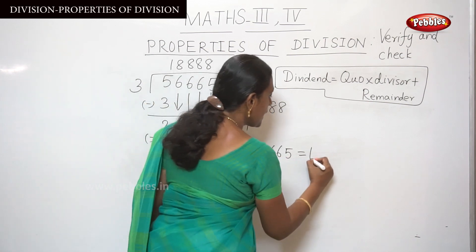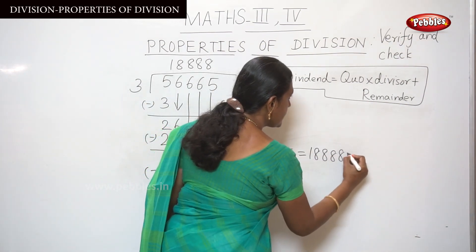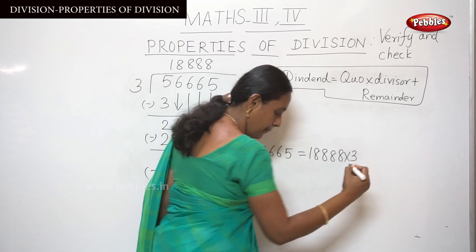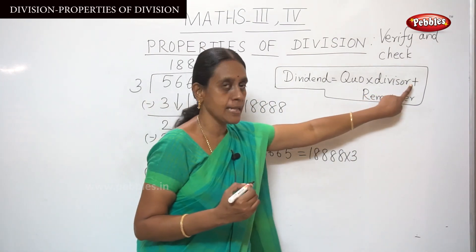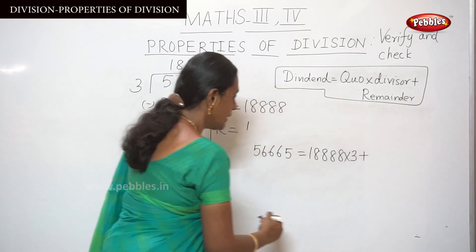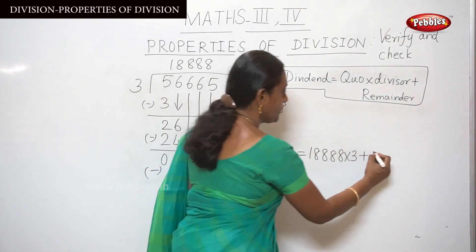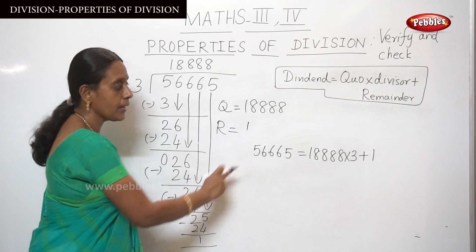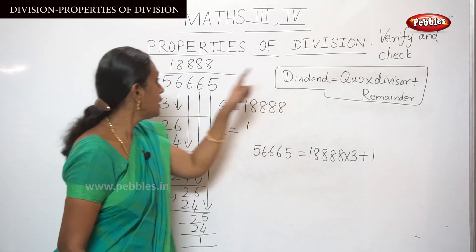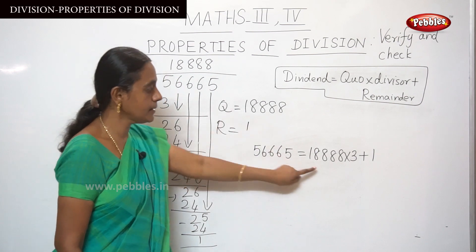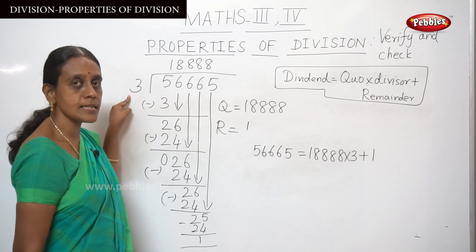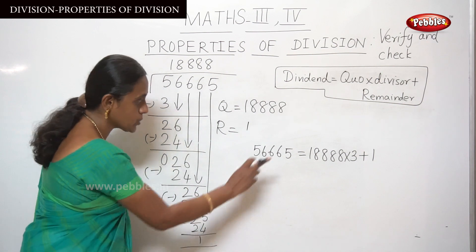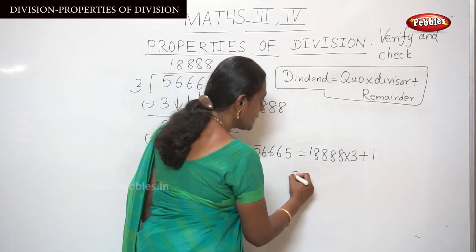So we write: Dividend = Quotient × Divisor + Remainder, that is 56,665 = 18,888 × 3 + 1. Now we have to multiply 18,888 by 3.